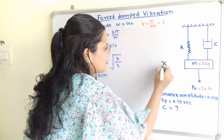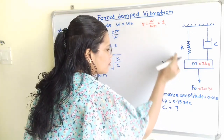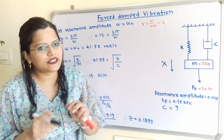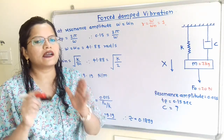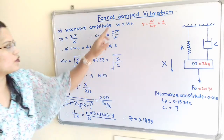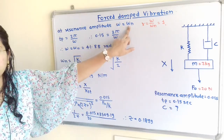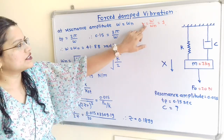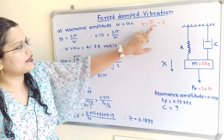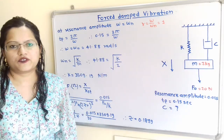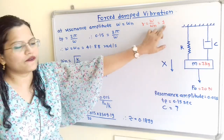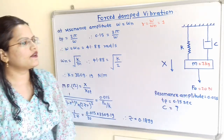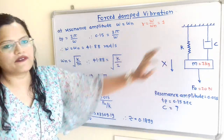At resonant amplitude, ω equals ω_N, so the frequency equals natural frequency. The frequency ratio R = ω/ω_N = 1. So value of R we have to take as 1 for the resonant amplitude. Now we will first find out the value of K.